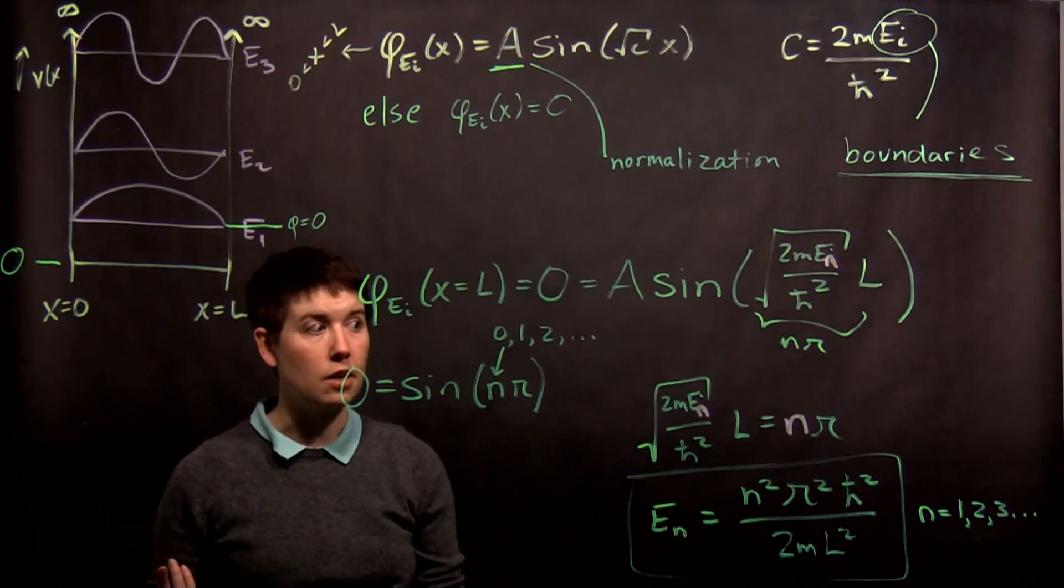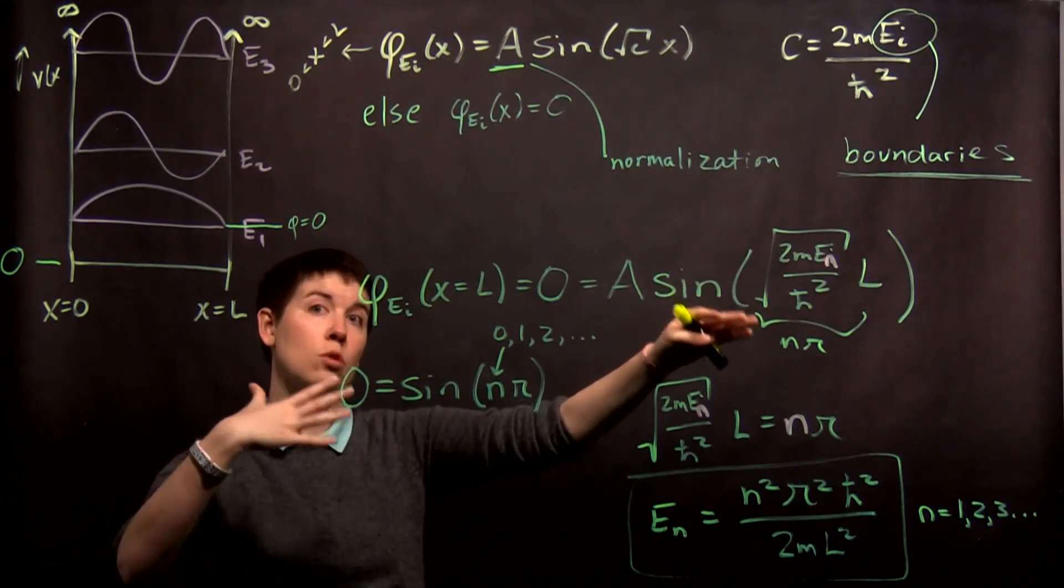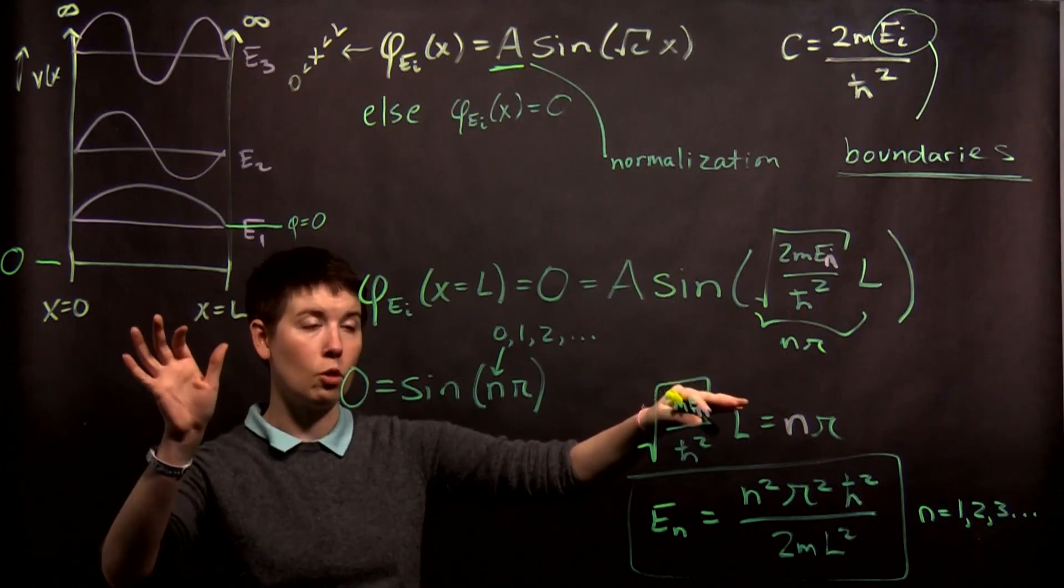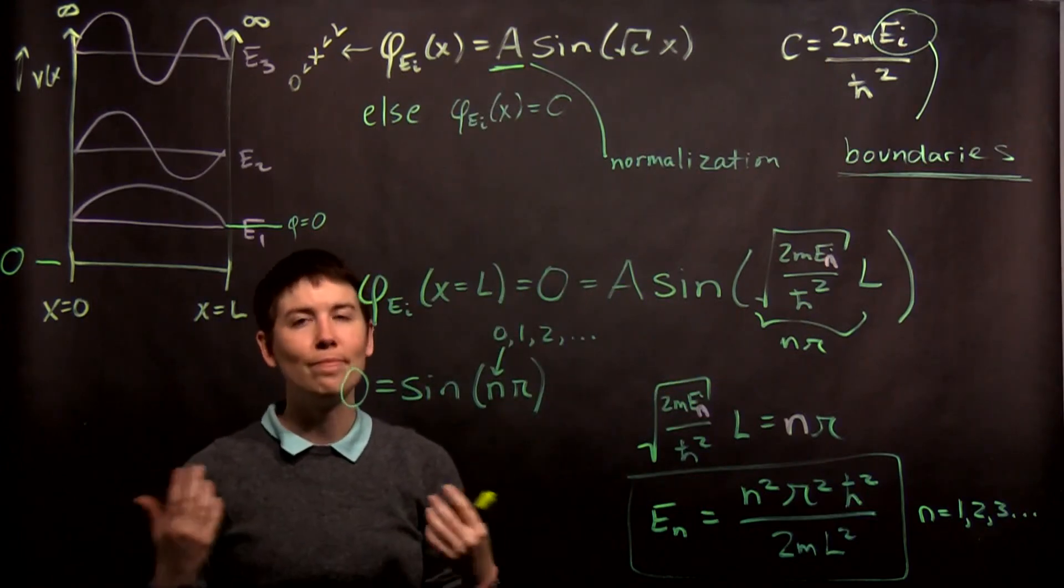So, at this point we're basically done. But notice that we had to really understand what these sinusoidal functions look like in terms of the geometry of our well, and we had to do that integration to get what that normalization is. But, now we're done.